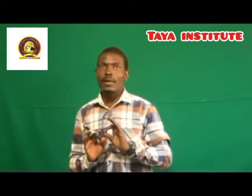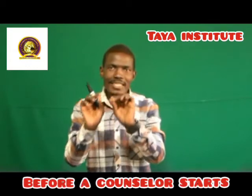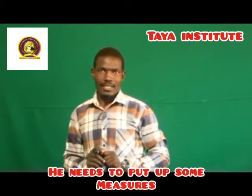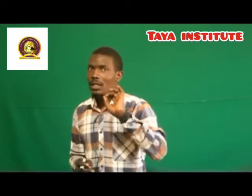When we say the techniques of counseling, this is the method that a counselor should use before he or she starts counseling. The first priority before a counselor starts counseling is that he should take these measures. Number one: you must collect the information about the person you are counseling. You look at the motive. That's number one.